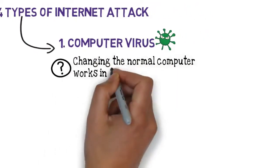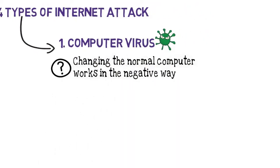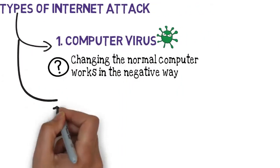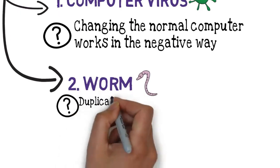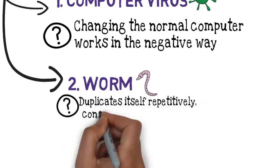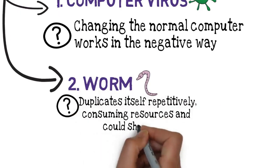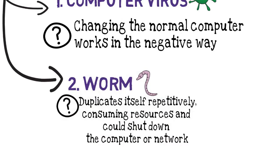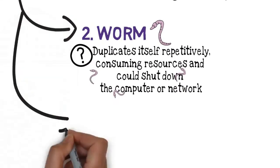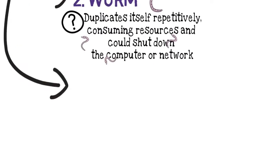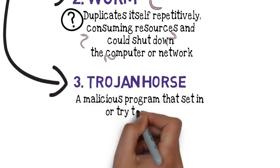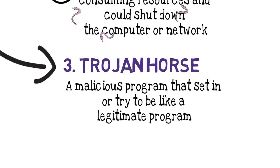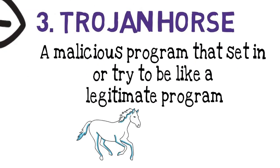A virus changes the normal computer works in a negative way. Second: Worm — duplicates itself repetitively, consuming resources, and could shut down the computer or network. Third: Trojan horse — a malicious program that is designed to appear like a legitimate program.